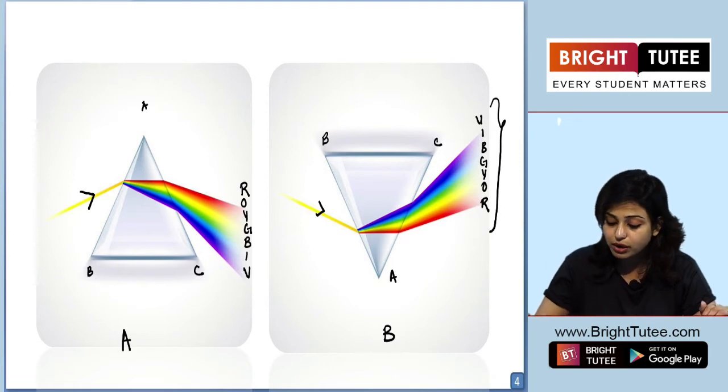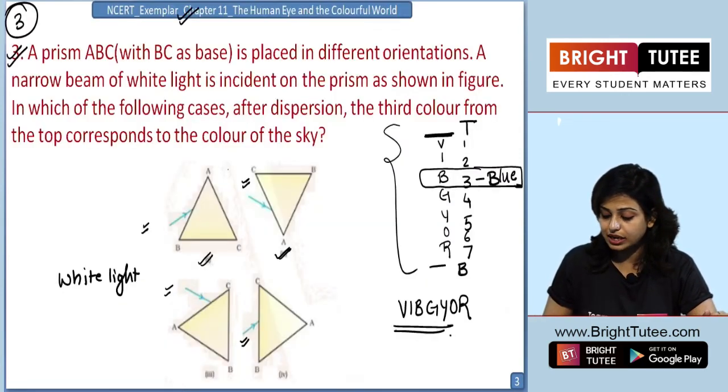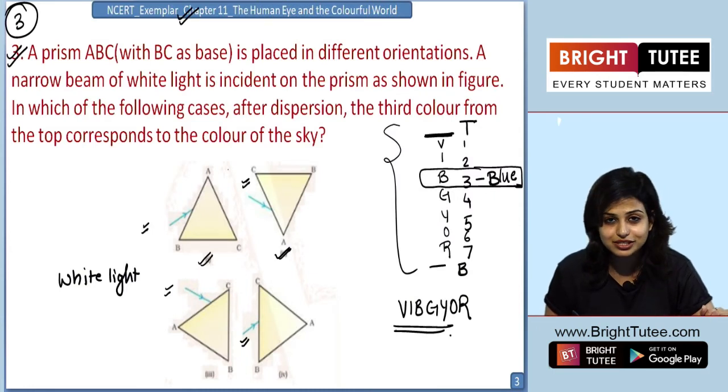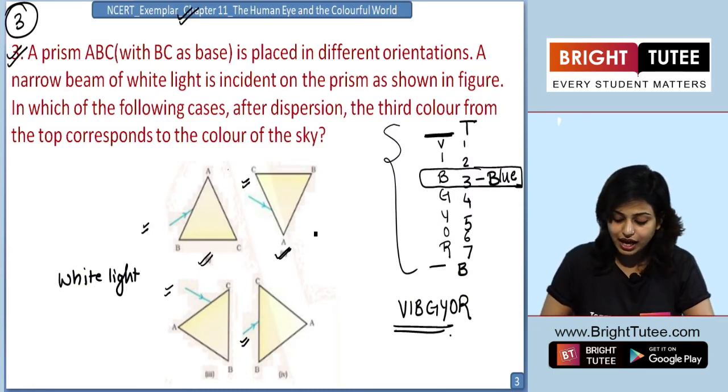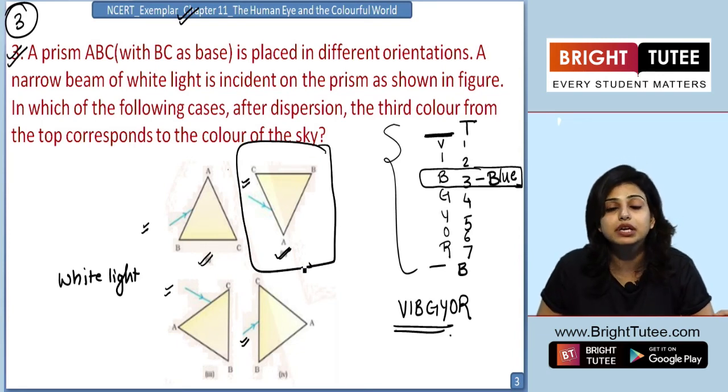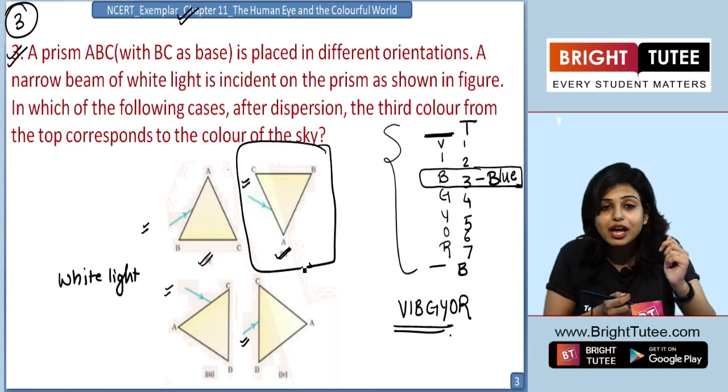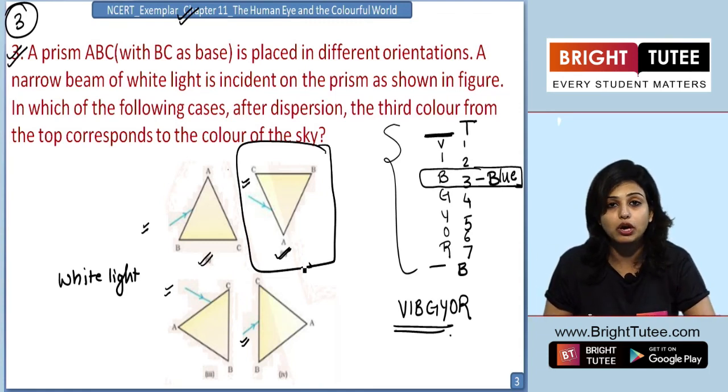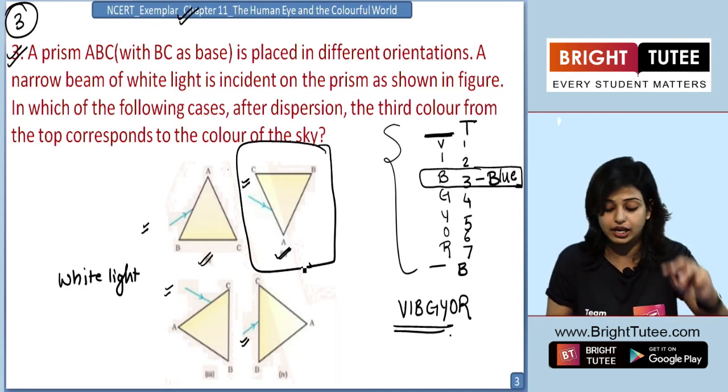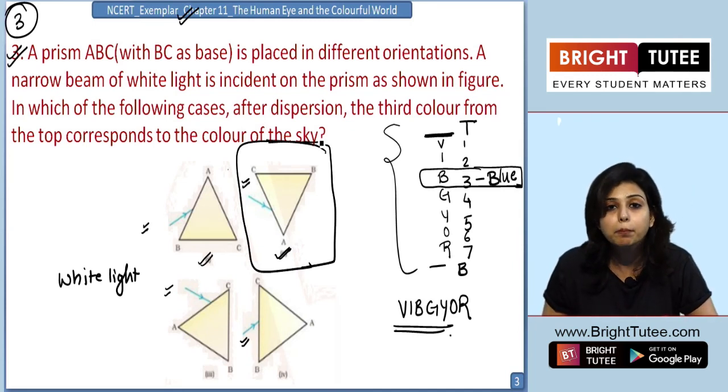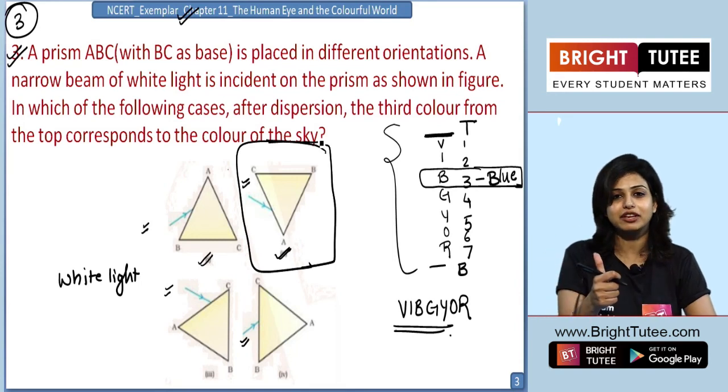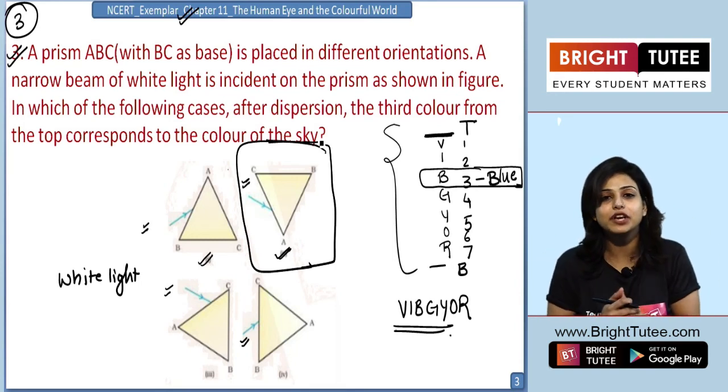So if we go back to our problem, what is the right answer students? Very correct. The right answer will be when we have the prism in the downright position, so that we get the third color as the color of sky, which we know is blue. Very well done. We will see you in the next video.